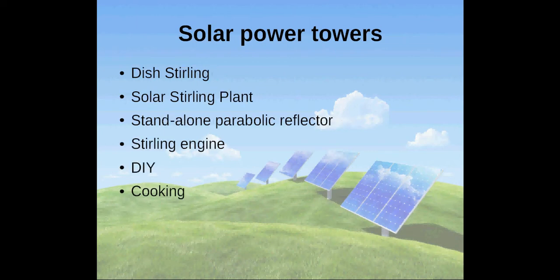Many versions of solar power towers are called dish sterlings or solar sterling plants. They consist of a standalone parabolic reflector that concentrates light onto a receiver, positioned at the reflector's focal point. A sterling engine is used to generate power.